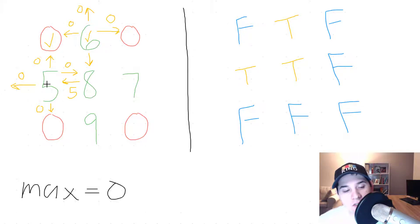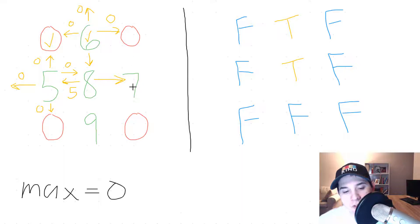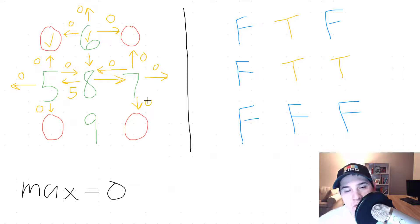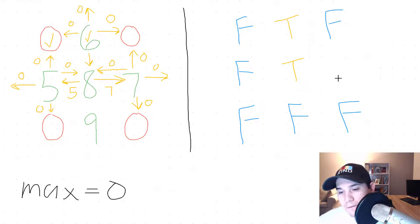Continuing the DFS for node 8, we check right and visit cell 7, marking its corresponding Boolean position as true. From node 7: left checks node 8, which is already visited (return 0); above is 0; right is out of bounds; down is 0. The maximum of four 0s is 0, plus cell value 7 — we return 7 to node 8. We then reset node 7's Boolean value back to false.